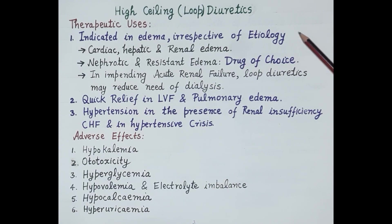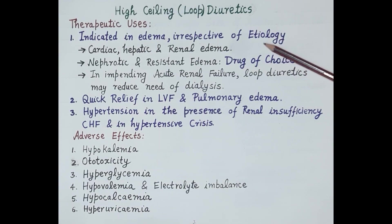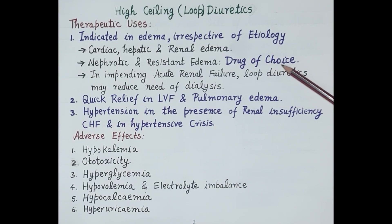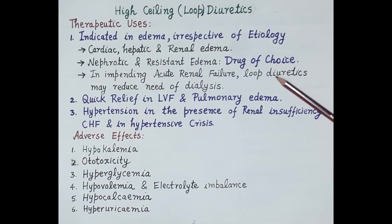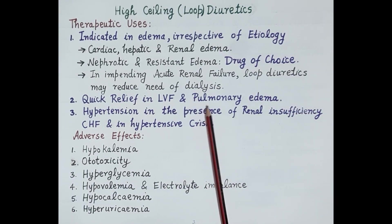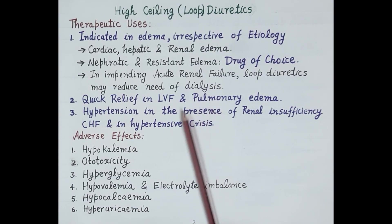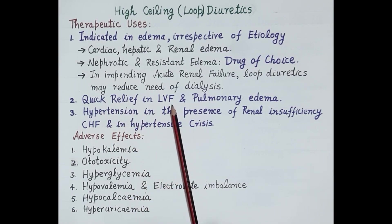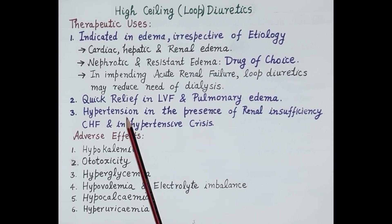Therapeutic uses of loop diuretics: First, they are used in edema — loop diuretics are effective in edema irrespective of its etiology, including psoriatic, hepatic, and renal edema. They are the drug of choice in nephrotic and resistant edema. In impending or suspected acute renal failure, loop diuretics may reduce the need for dialysis. Furosemide also provides quick relief in left ventricular failure and associated pulmonary edema by dilating the superior and inferior vena cava and reducing left ventricular filling pressure.